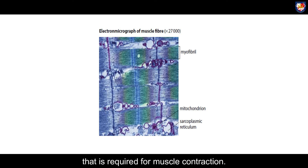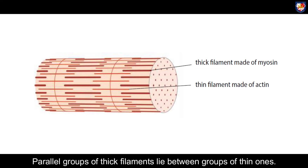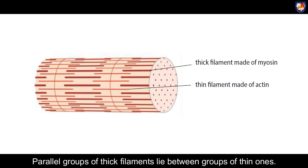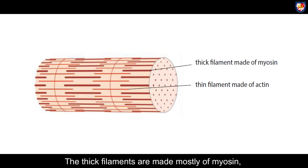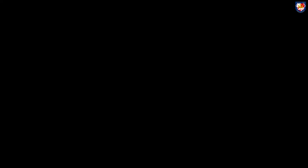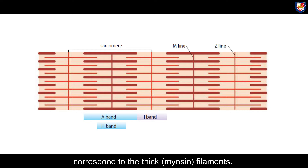Each myofibril is made of yet smaller components called filaments. Parallel groups of thick filaments lie between groups of thin ones. The thick filaments are made mostly of myosin, whilst the thin ones are made mostly of actin. The most striking thing about a muscle fiber is its stripes or striations. The darker parts of the stripes, the A bands, correspond to the thick or myosin filaments.